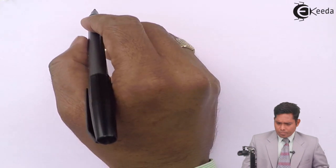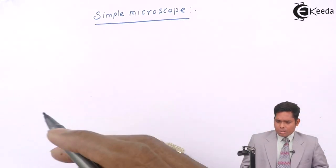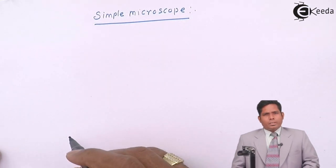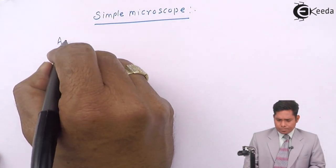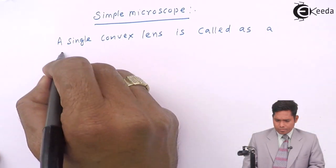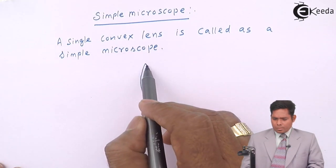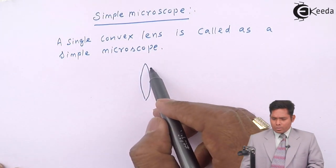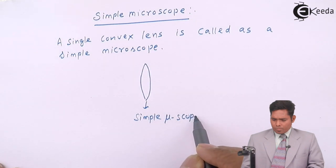Today we will discuss the simple microscope and find its magnifying power. A single convex lens is called a simple microscope.